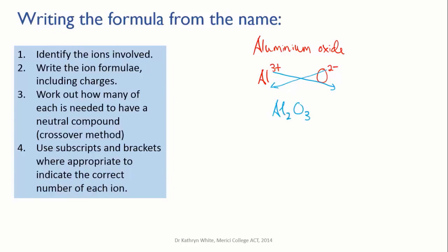To check that that works in terms of charges, we've got two aluminiums and each of them is 3+, which equals a total positive charge of +6. And we have three oxygens, and each of those is -2. Three times -2 is -6. So +6 and -6 cancel out, and we have our neutral compound.